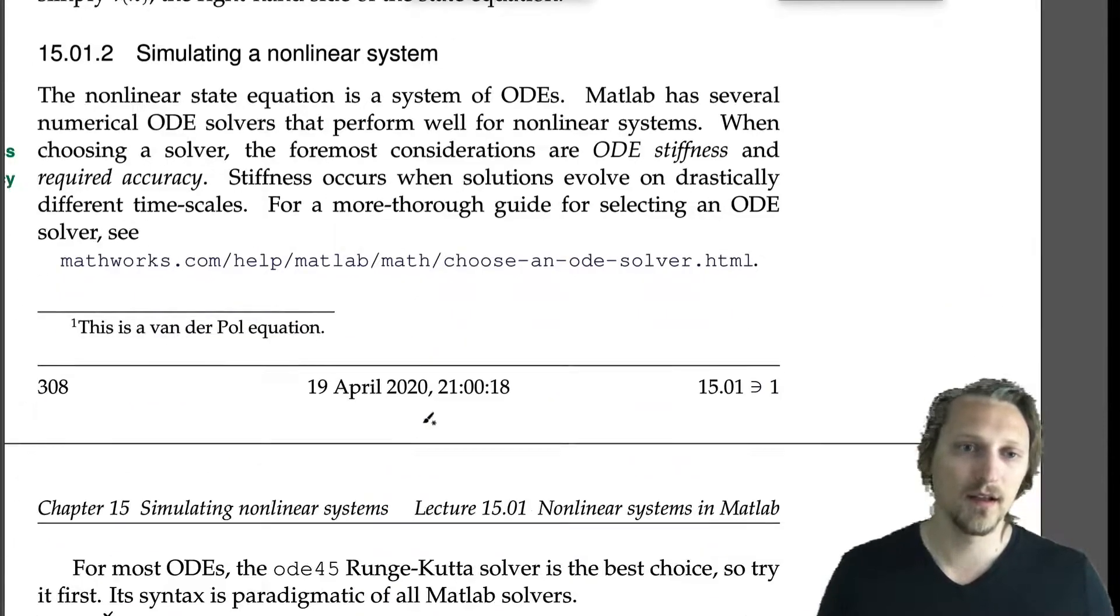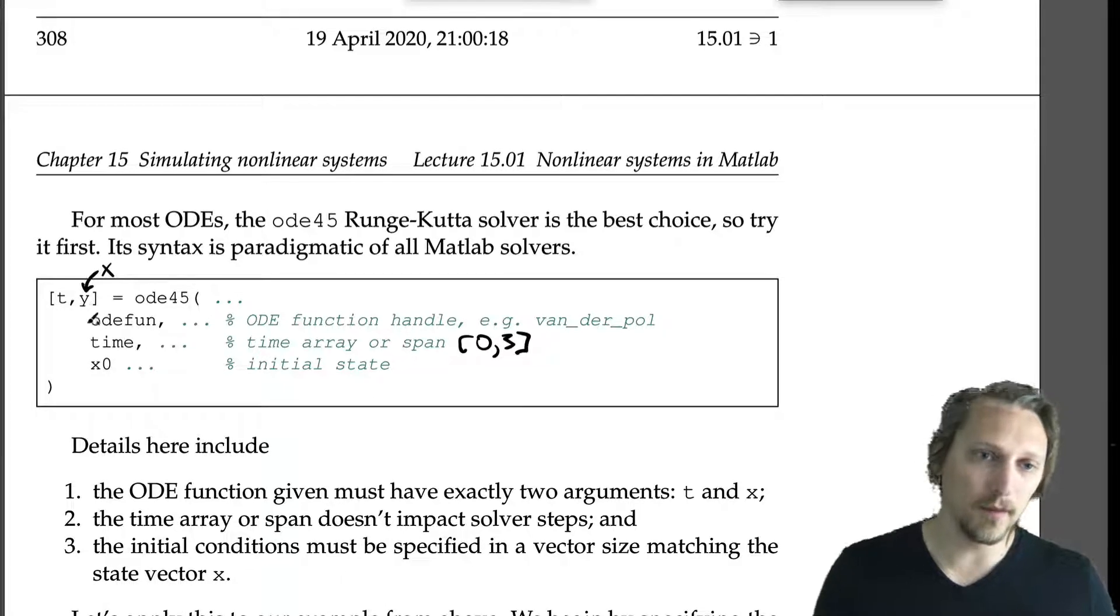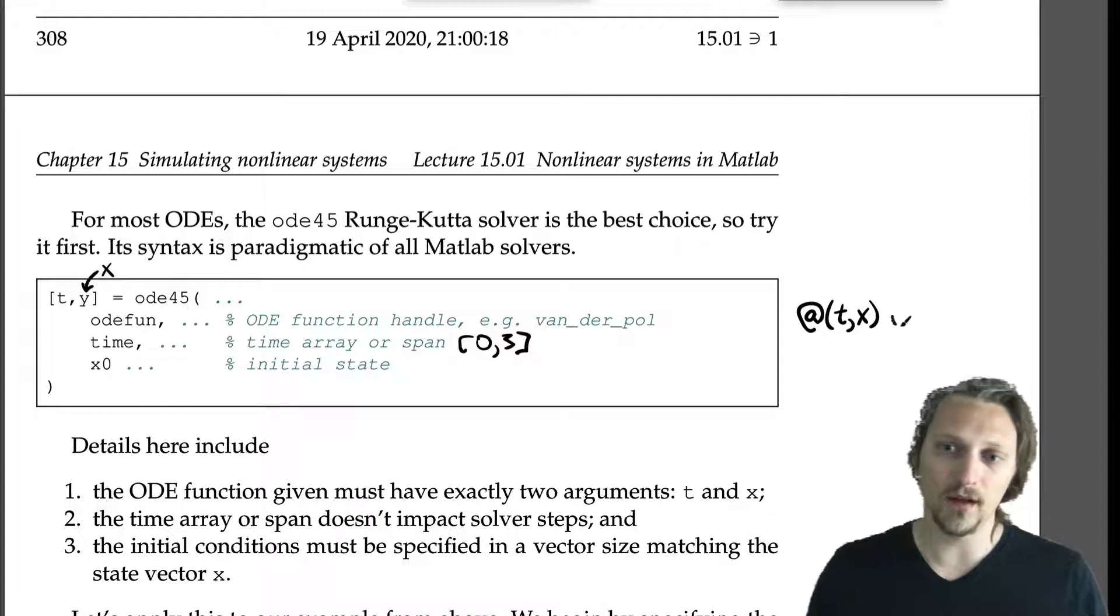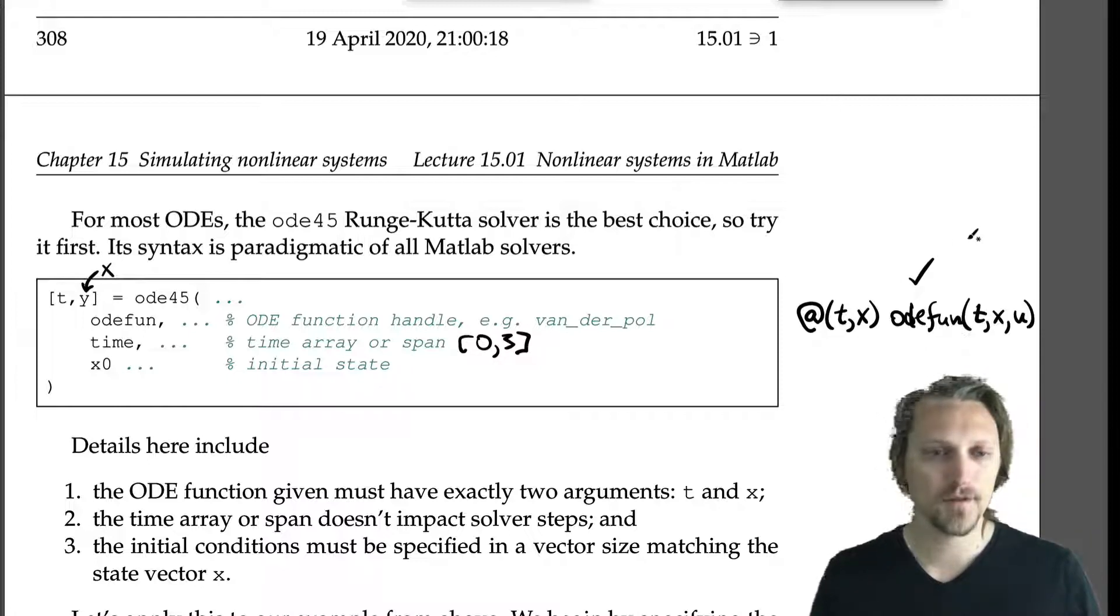And the only thing to note is that when we call it here, the ODE function does have to be a function of just time and x. That's okay; we can—there's a little trick we can do—which is we can create an inline, as that argument, we can create a little inline anonymous function of time and x, and then we can call our ODE function. So ODE function in this case, van_der_pol, of time and x, and then you can put in your other arguments here, like u, and it'll run just fine like that. So that's how to do a nonlinear system simulation in MATLAB.